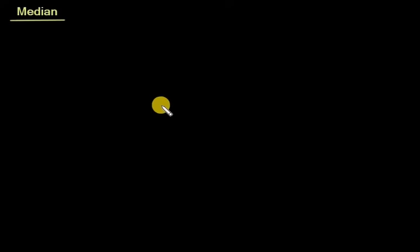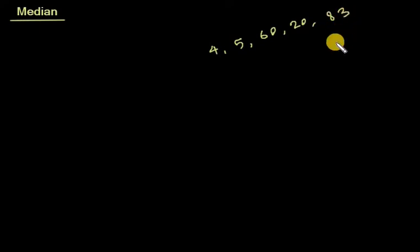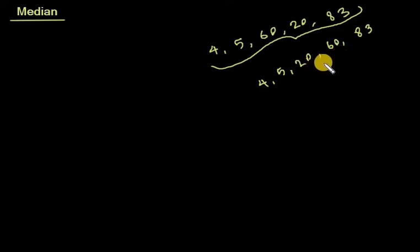The next measure of central tendency is median. Median is the value of that item which occupies the central position when items are arranged in ascending or descending order of their magnitude. For example, the numbers 4, 5, 60, 20, 83 arranged in order become 4, 5, 20, 60, 83 — so the central position value is 20, which is the median.